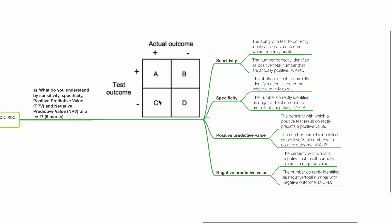Specificity is the ability of a test to correctly identify a negative outcome where one truly exists. It is the number correctly identified as negative divided by total number that are actually negative. D divided by D plus B.